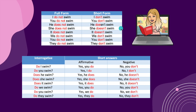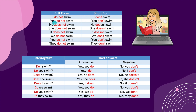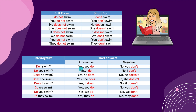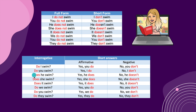Here we have some helpful boxes. You have the full form and the short form: I do not swim → I don't swim. You do not swim → You don't swim. He does not swim → He doesn't swim. For the interrogative: Do I swim? Yes, I do / No, you don't. Do you swim? Yes, I do / No, I don't. Does he swim? Yes, he does / No, he doesn't. Remember: use 'does' only with he, she, and it. With I, you, we, they — use 'do.'